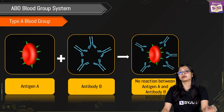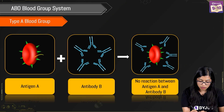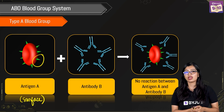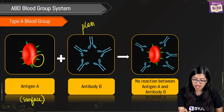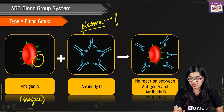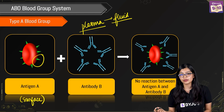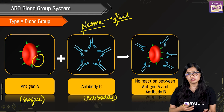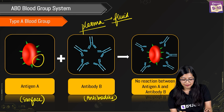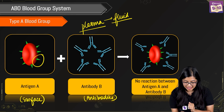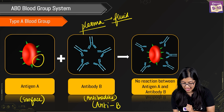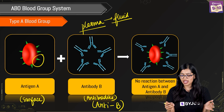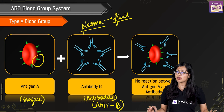In blood group A, we have antigen A present on the surface of the RBC. Interestingly, in the plasma — the fluid part of blood — antibodies are produced in response to the antigen. But it is not antibody A that is present; rather it is antibody B, which we call anti-B. Antibody B is not specific to antigen A, so no reaction occurs between antigen A and anti-B, which is how it is able to coexist safely.